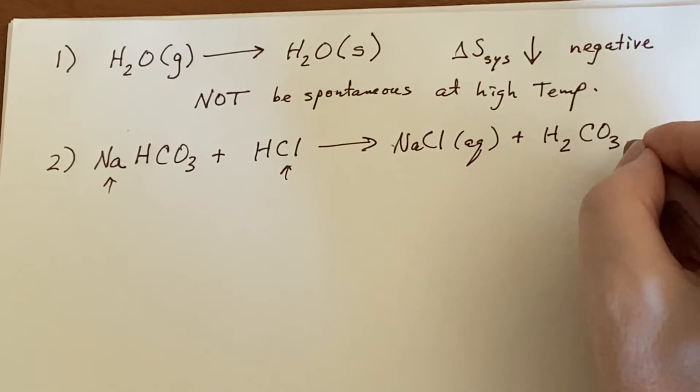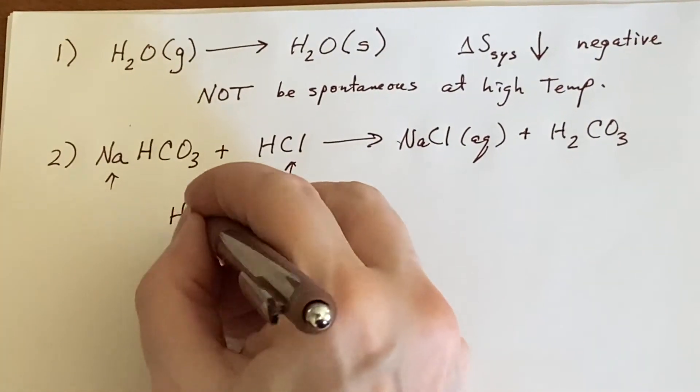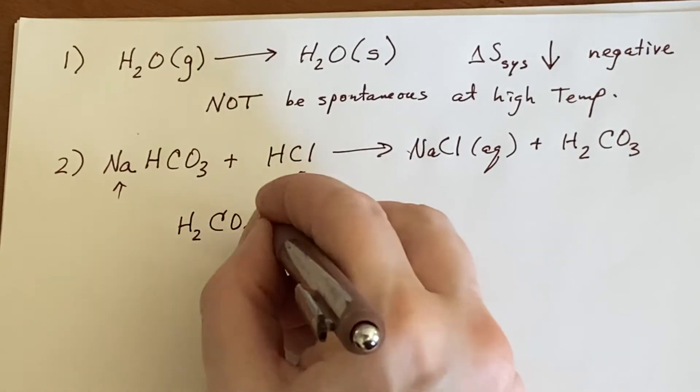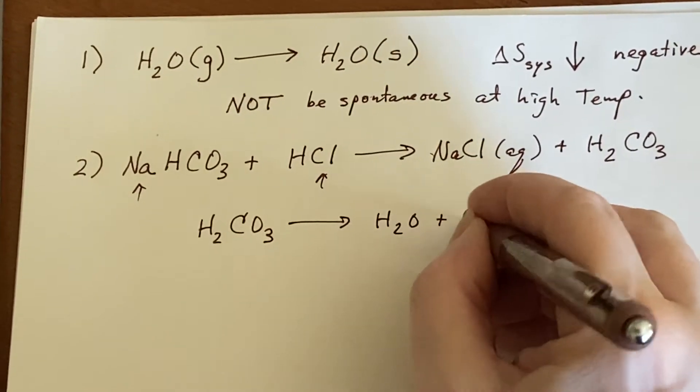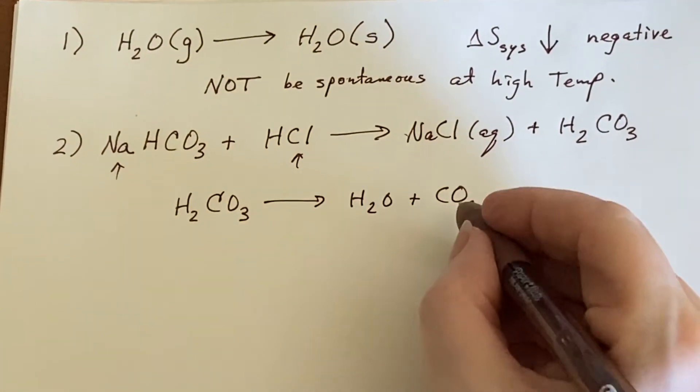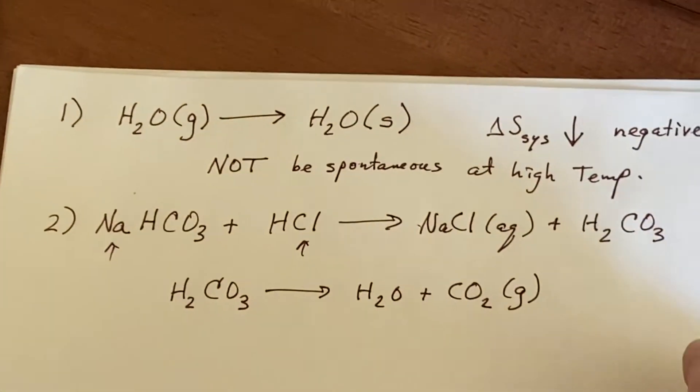but carbonic acid is not stable. So it would continue from here to decompose into water and carbon dioxide. And that's the source of the bubbles that you see right here are carbon dioxide bubbles coming up out of the solution as it happens.